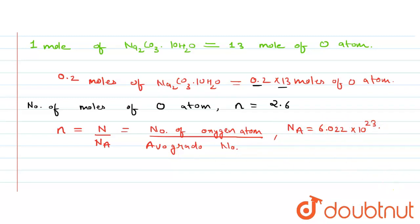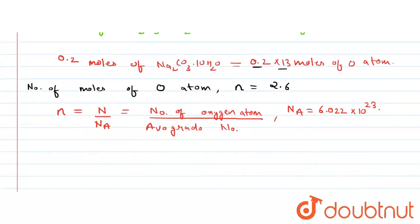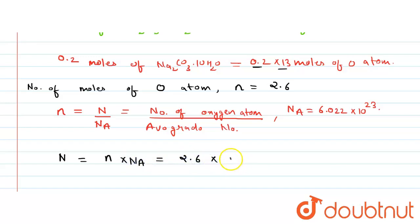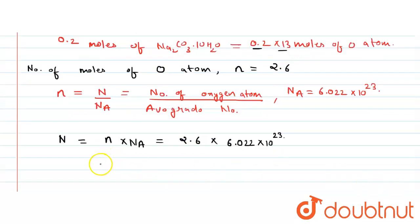Let us find out capital N. The value of capital N equals small n into Na, which is 2.6 into 6.022 into 10 to the power 23. Our final answer is capital N equals 15.65 into 10 to the power 23 atoms of oxygen.